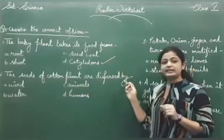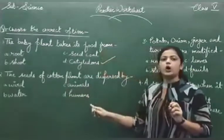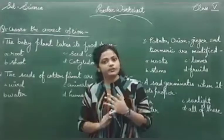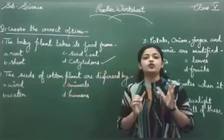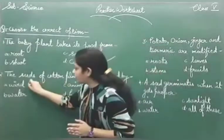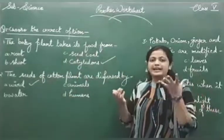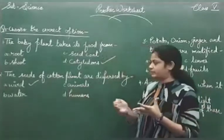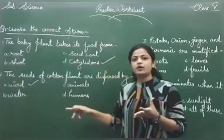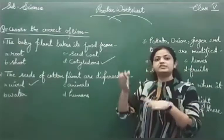The next question is: the seeds of cotton plants are dispersed by — wind, water, animals, or humans? You read about the dispersal of seeds — there are various modes of dispersal. The seeds of cotton plants are very light, so they can be easily dispersed by the means of wind. Seeds dispersed by water include coconuts and seeds of lotus. Seeds that can cling to the body of animals are dispersed in that way.